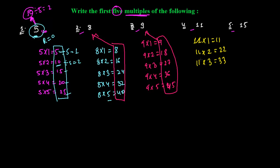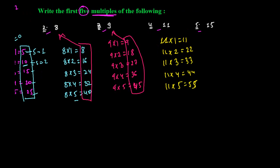11×4=44, so 44 is the fourth multiple of 11. 11×5=55, so 55 is the fifth multiple of 11. These are the first five multiples of 11.